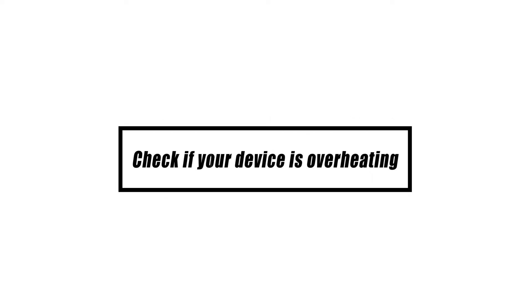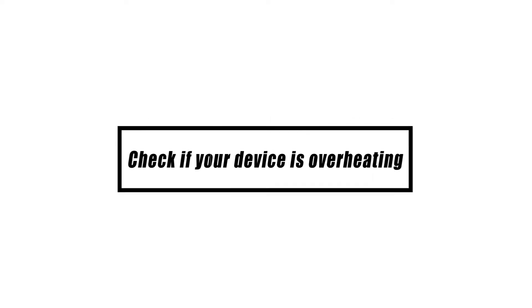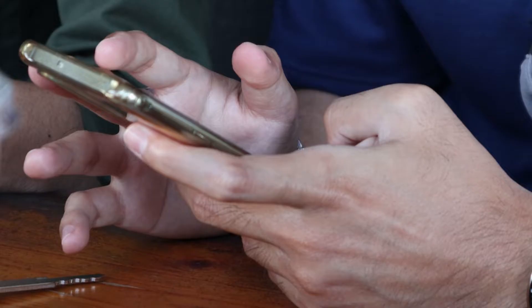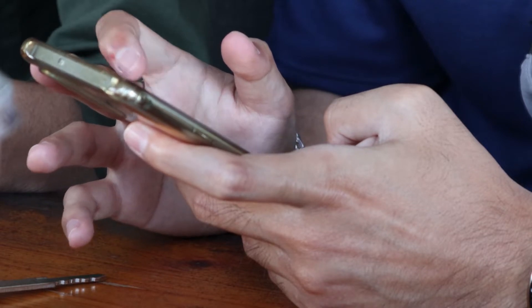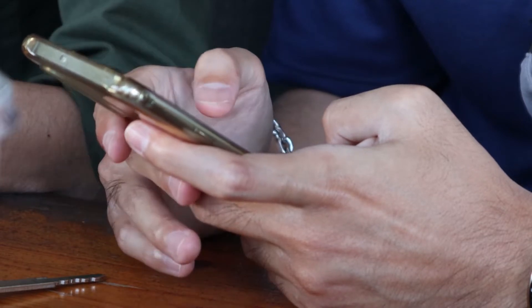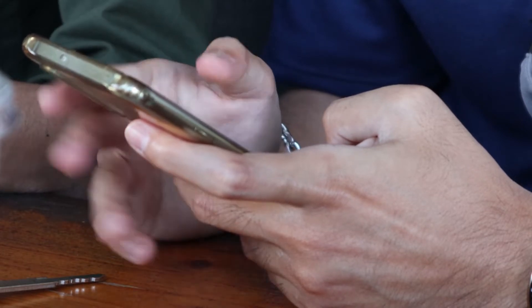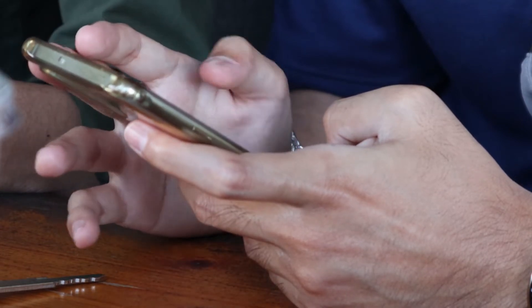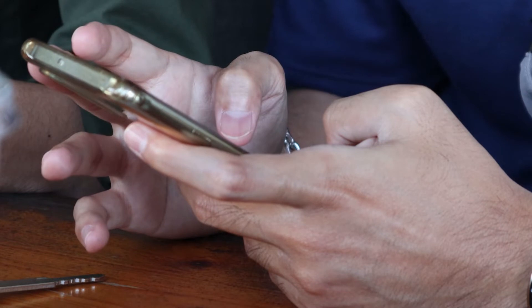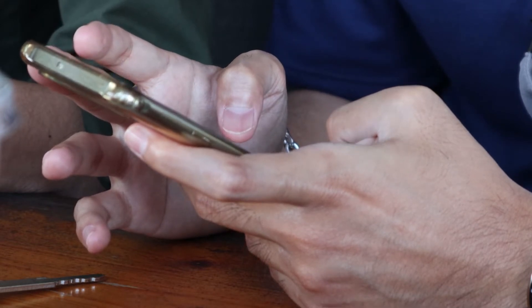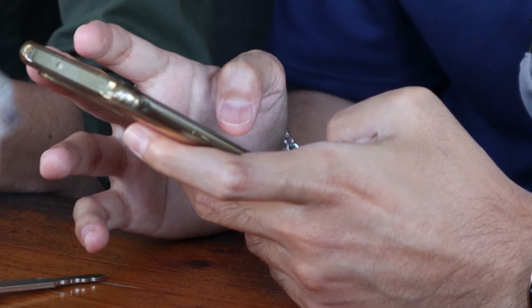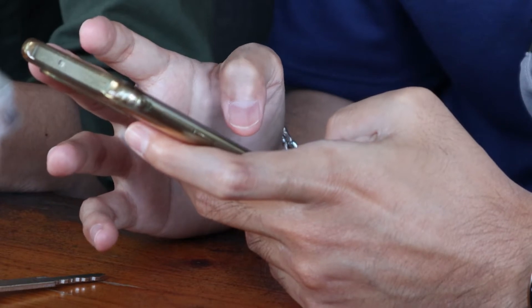Experiencing an increase in temperature and a decrease in performance on your Samsung smartphone or tablet? It's probably overheated. Overheating and general slowness are often symptoms of the same underlying software or hardware issue.